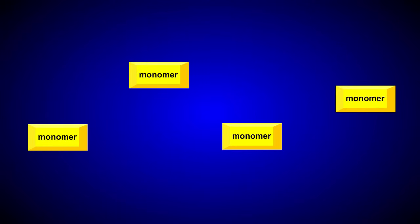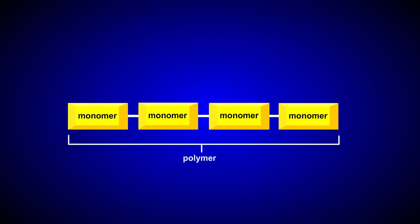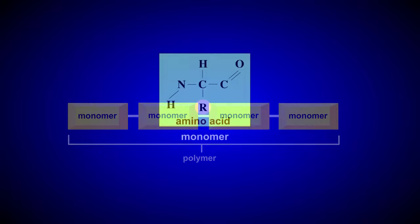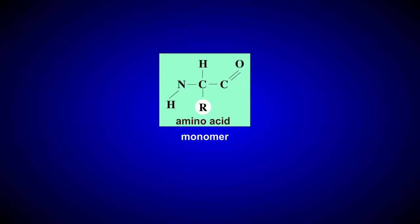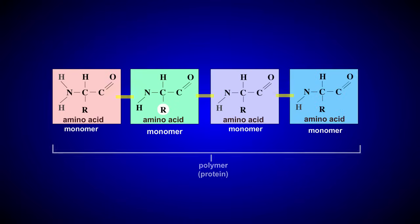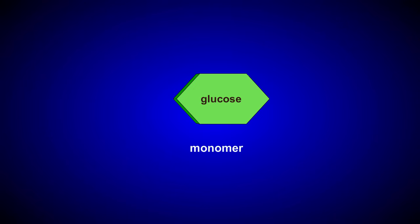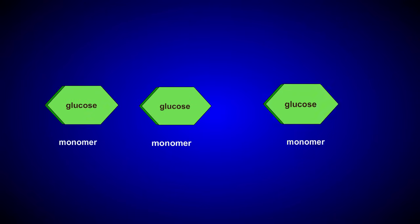Many important biological molecules are made of repeating subunits called monomers. When many monomers join, the result is a polymer. For example, amino acid monomers join to form a protein polymer, and glucose monomers combine to form a complex carbohydrate.